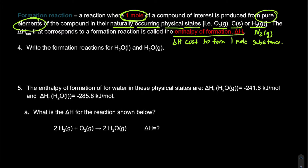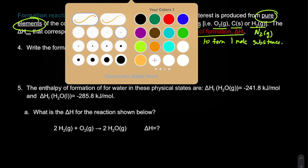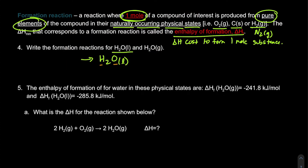Let's apply this to formation reactions of water as a liquid and as a gas. For water as a liquid, I write the product first — one mole of liquid water — then identify hydrogen and oxygen as the elements, so H2 and O2 are the reactants. Balancing while keeping one mole of product gives: H2 + ½O2 → H2O(l). Similarly for water as a gas: H2 + ½O2 → H2O(g).